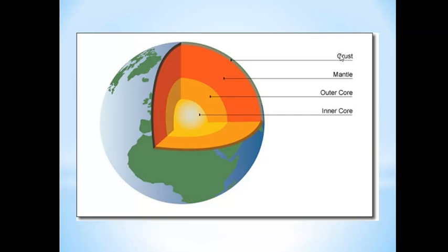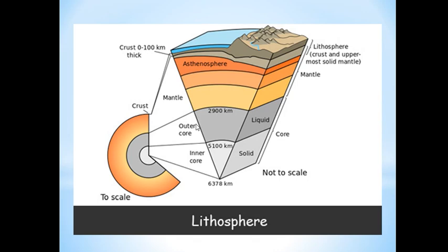Looking at the diagram, we have three main layers of the earth. The outermost layer is called the crust, the middle layer is called the mantle, and we have the core. The core is divided into two parts: outer core and inner core. The lithosphere is made up of the crust and the uppermost solid mantle.